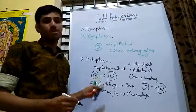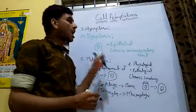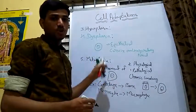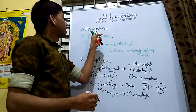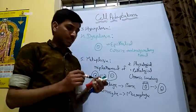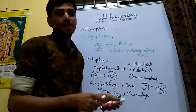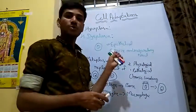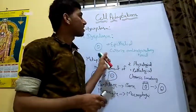These are all the five types of cell adaptations: atrophy, hypertrophy, hyperplasia, dysplasia, and metaplasia. Please subscribe to my channel Nursing Now Easy, and like and share this video.